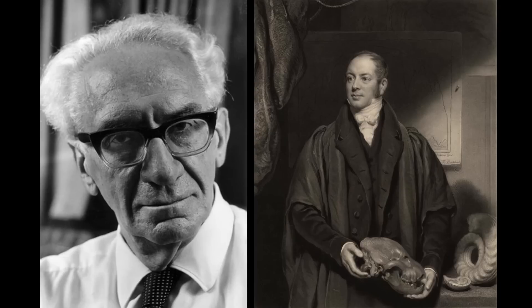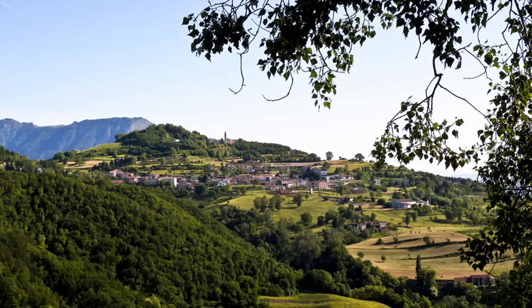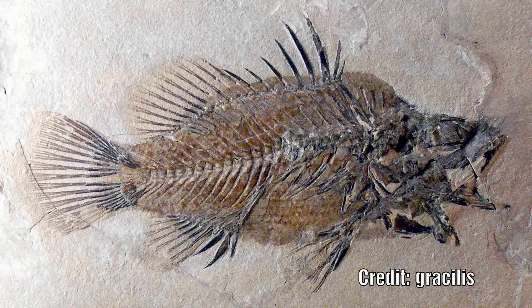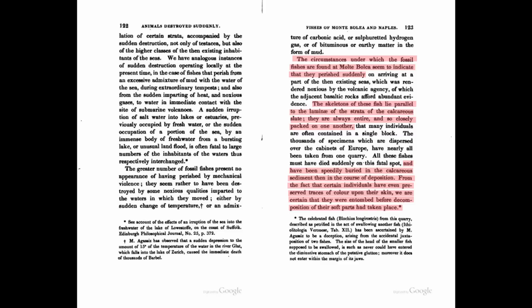But this is not the only place where there is evidence of such catastrophes. Velikovsky quotes from a variety of other sources to demonstrate that this phenomenon was not just restricted to the Old Red Sandstone. He references W. Buckland, who covers finds near Verona in north Italy, one of the richest sources of fossils in Europe. The circumstances under which fossil fish are found at Mont Bolca seem to indicate that they perished suddenly — the skeletons lie parallel to the lamina of the strata, always entire and closely packed on one another. From the fact that certain individuals have even preserved traces of colour upon their skin, we are certain they were entombed before decomposition of their soft parts had taken place.